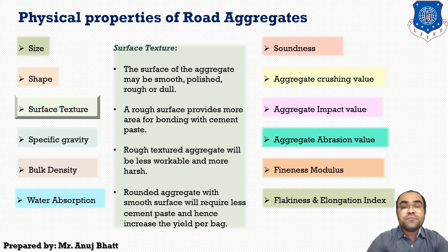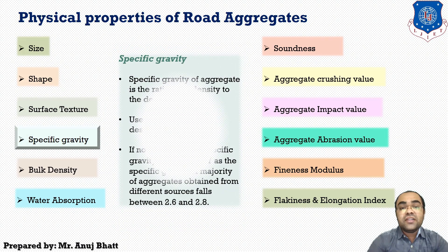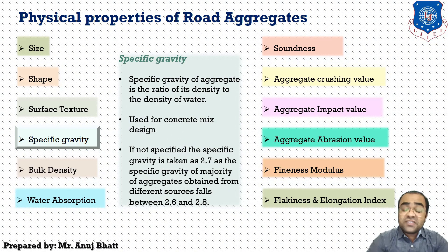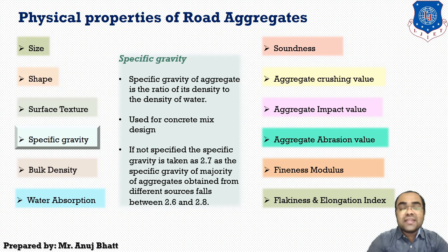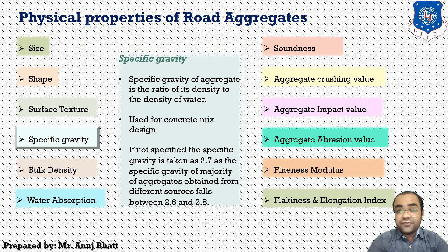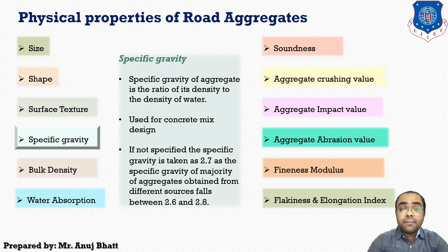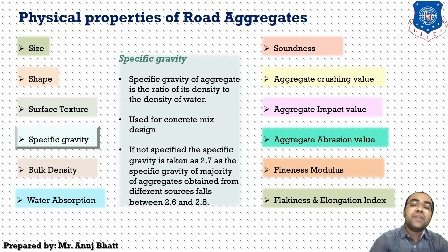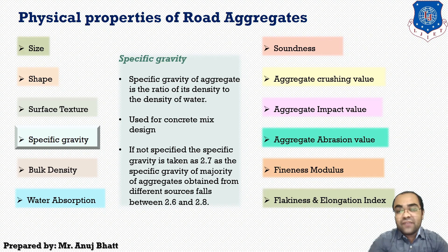The next property is specific gravity. The specific gravity of aggregate is the ratio of its density to the density of water. This is used for concrete mix design, and if not specified, the specific gravity is taken as 2.7 because the general specific gravity of majority aggregates falls between 2.6 and 2.8.